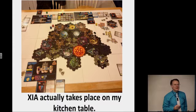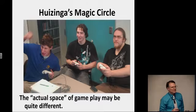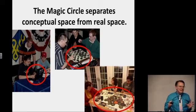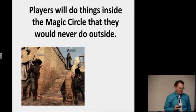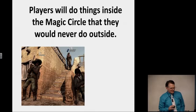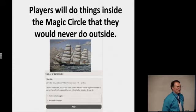XIA actually took place on my kitchen table — the actual space of gameplay may be quite different from the conceptual space. He came up with the concept of the magic circle, shown in red on these diagrams. The magic circle isn't really there, but it separates conceptual space from real space. Players will do things inside that magic circle they would never do outside it, like ambushing someone in Red Dead Redemption, carjacking in Grand Theft Auto 4, or denying medical supplies to wounded naval officers in A Choice of Broadsides by Choice of Games.